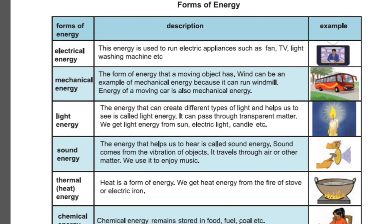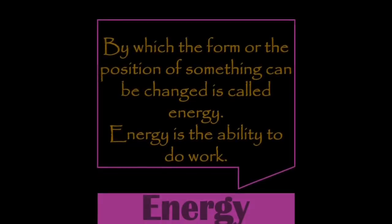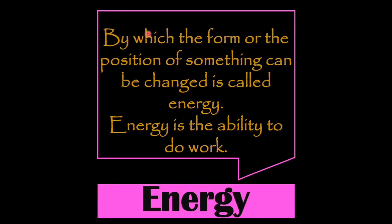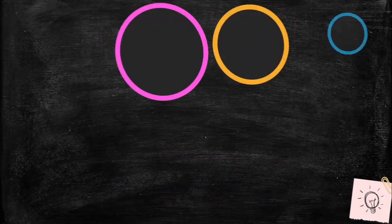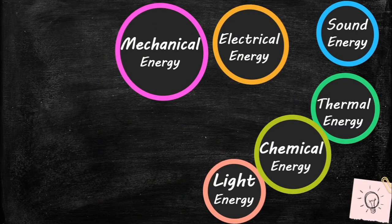Chemical energy remains stored in food, fuel, and coal. From this discussion we can say that energy is that by which the form or the position of something can be changed, or we can say energy is the ability to do work. We have seen from the book there are different kinds of energy available in the world: mechanical energy, electrical energy, sound energy, thermal energy, chemical energy, and light energy. We use these kinds of energy in our everyday life.